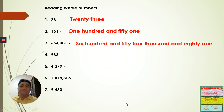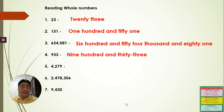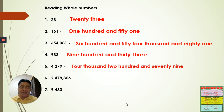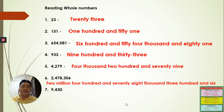Number four: six hundred and thirty-three — a three-digit number. Number five: four thousand two hundred and seventy-nine — a four-digit number. Number six: two million four hundred and seventy-eight thousand three hundred and six — a seven-digit number.